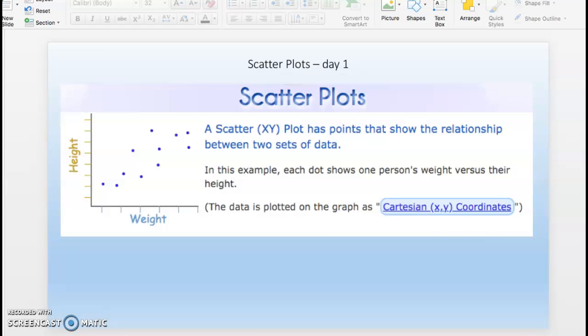A scatter plot displays points and shows the relationship between two sets of data. You've seen it many times as you make a graph. This one here shows each person's height versus their weight. We do it on one of these XY Cartesian coordinate planes.